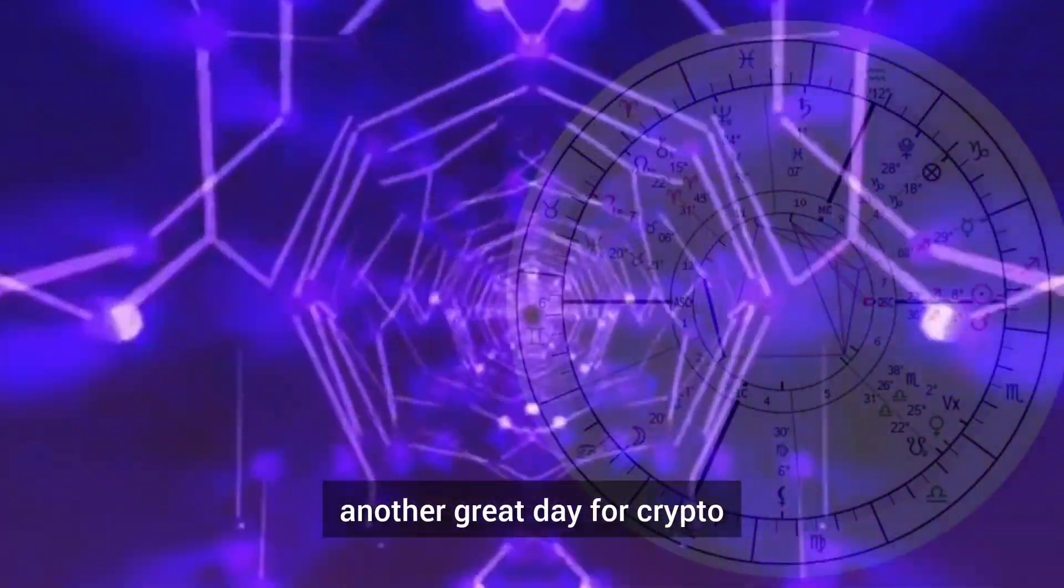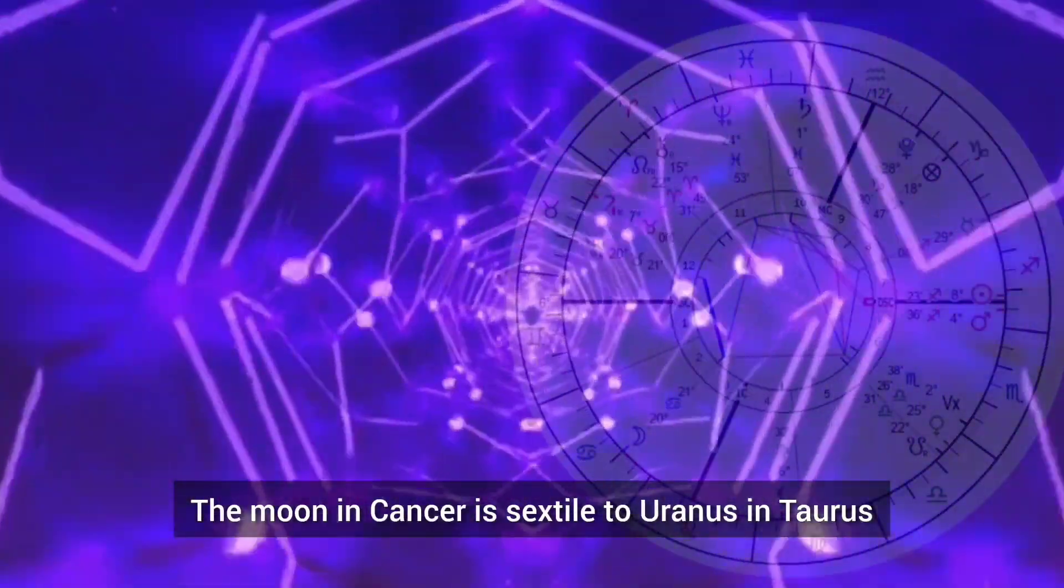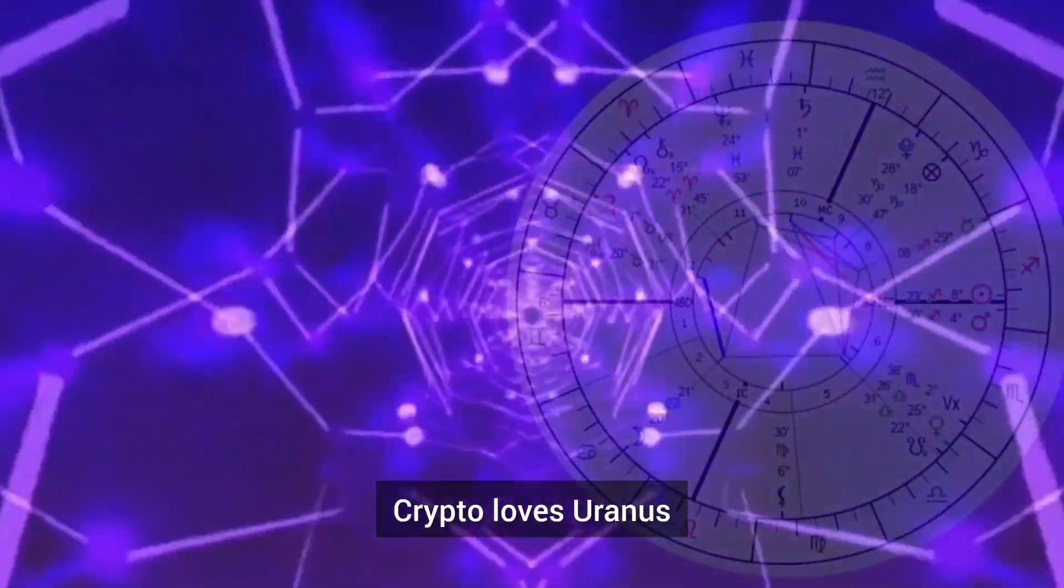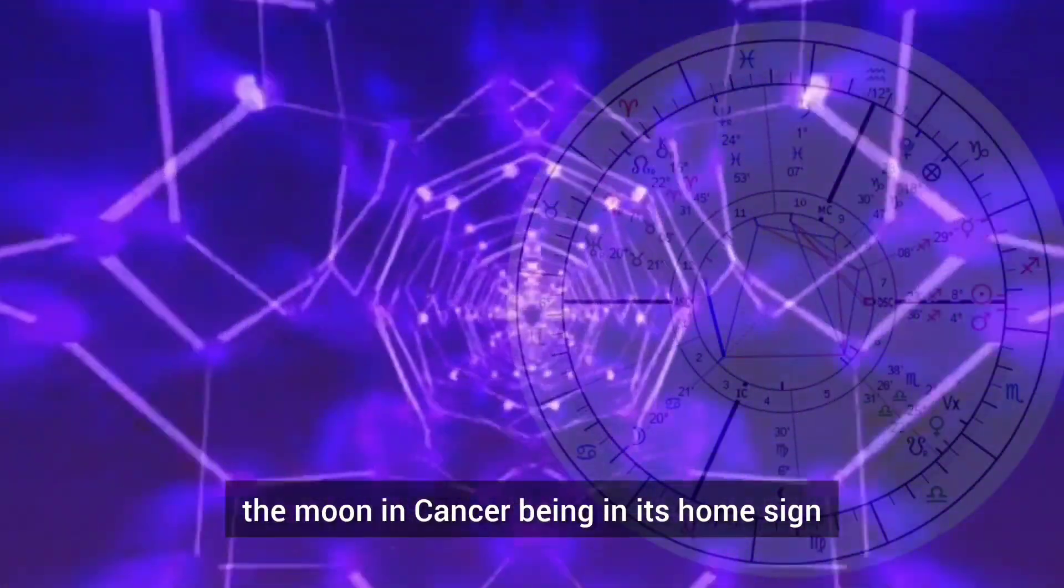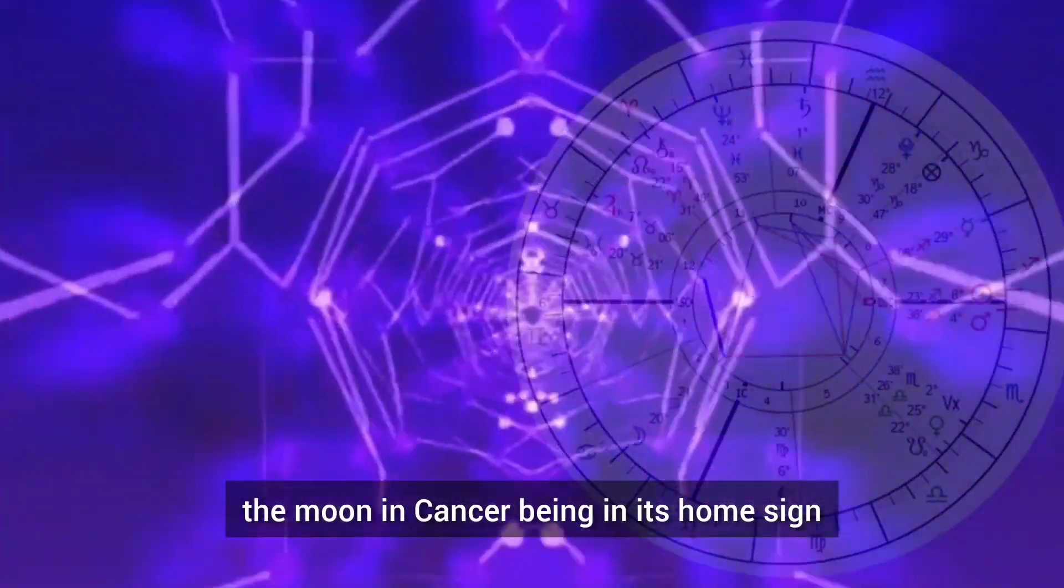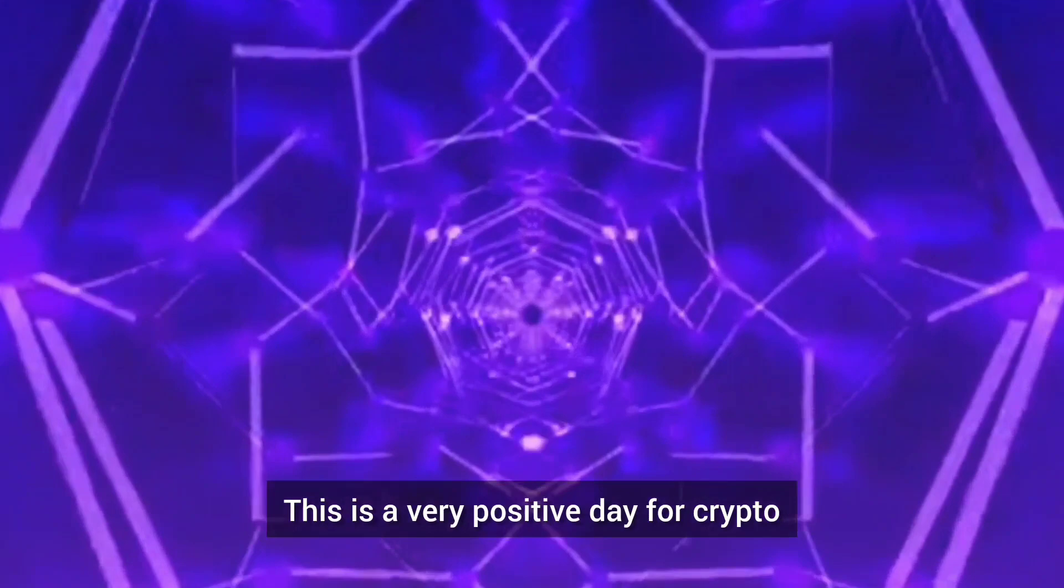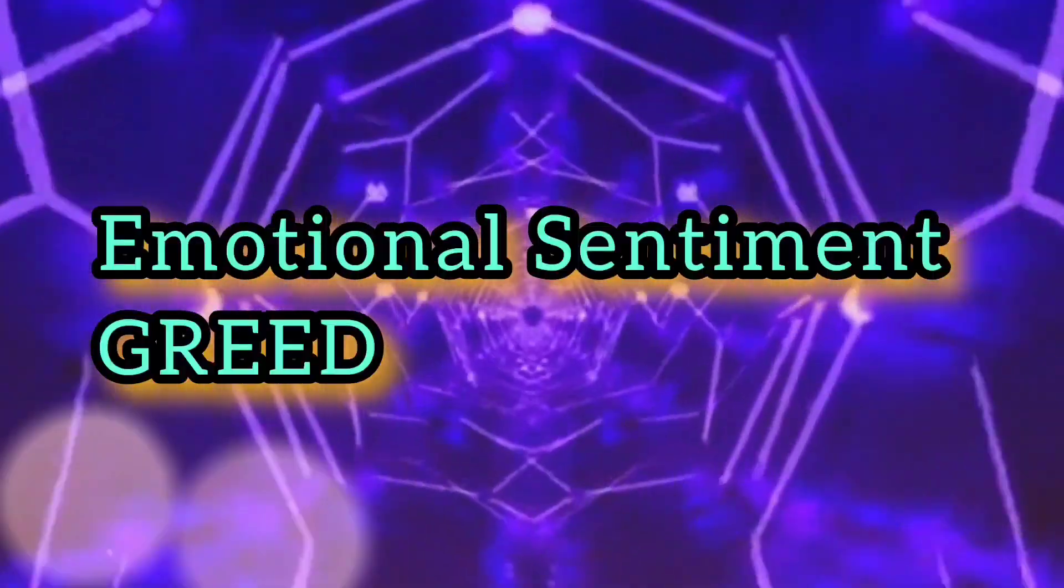November 30th, another great day for crypto. The moon in Cancer is sextile to Uranus in Taurus. Crypto loves Uranus. The moon in Cancer being in its home sign, this is just positive energy all around. This is a very positive day for crypto. Emotional sentiment is greed.